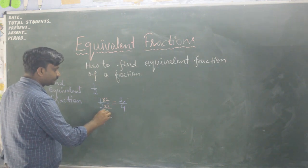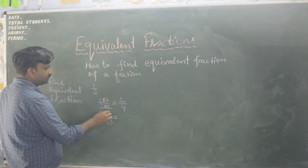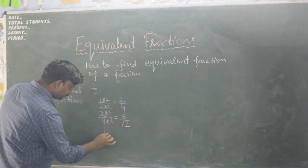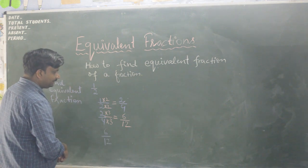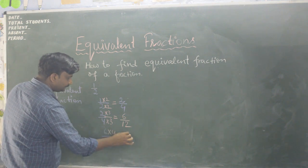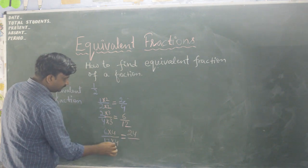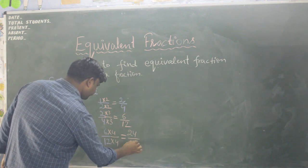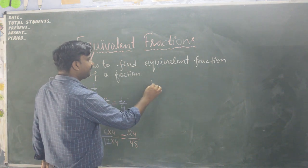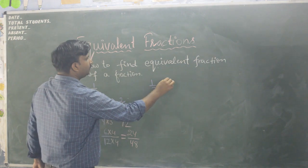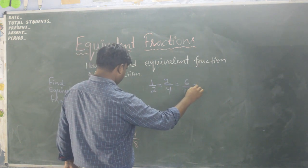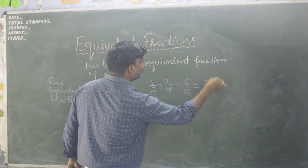Let us multiply by 3: 3 times 1 is 3, 3 times 2 is 6 — so another equivalent fraction is three upon six. Multiply by 4: 4 times 1 is 4, 4 times 2 is 8 — so four upon eight. Then multiplying by further numbers: we can get 6 upon 12, 24 upon 48, and so on. So equivalent fractions for 1 upon 2: 2/4 = 6/12 = 24/48 and so on.